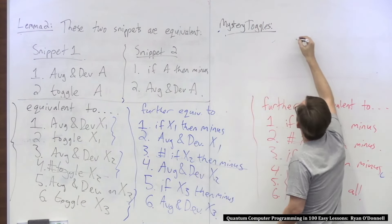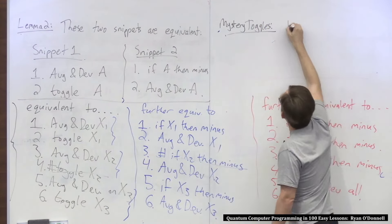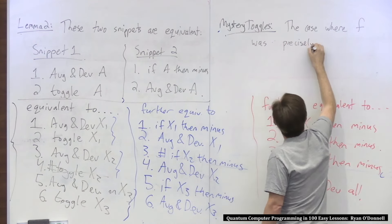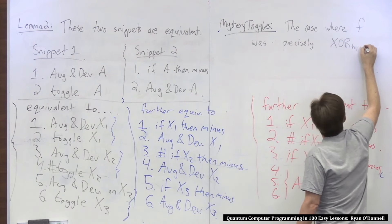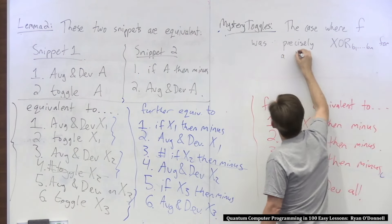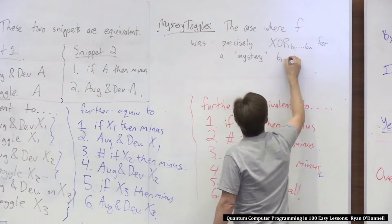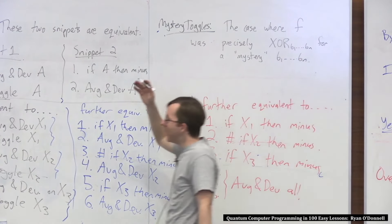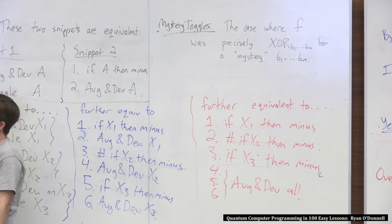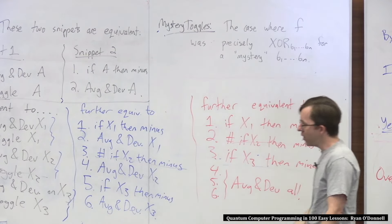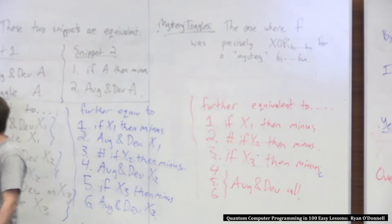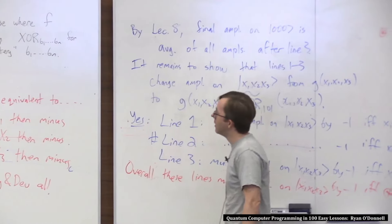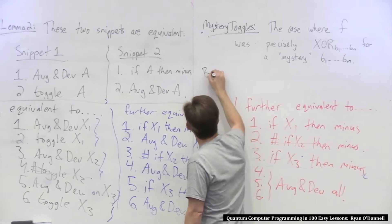We used it for the mystery toggles problem. Here, this was the case where f was somehow precisely itself some XOR function for some mystery string b1 through bn. In that case, if for some reason you don't know what this string is but you do have code that somehow computes this XOR function, then this paradigm has a property that the correlation of f with the one secret XOR function is one, so you just see that string with probability 100%.